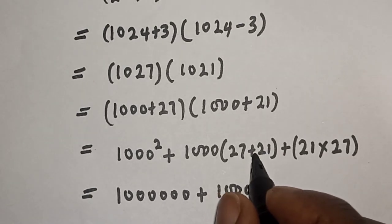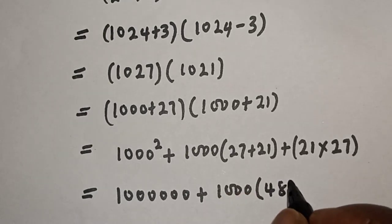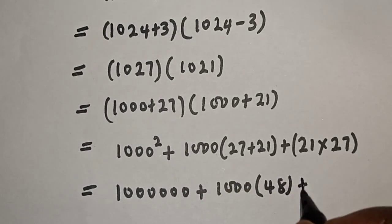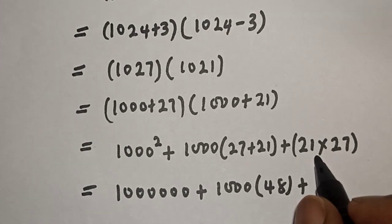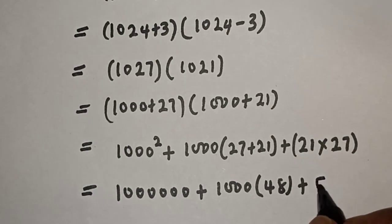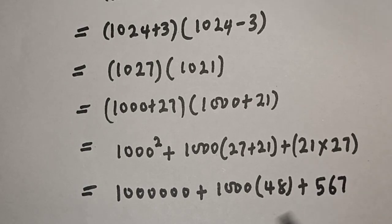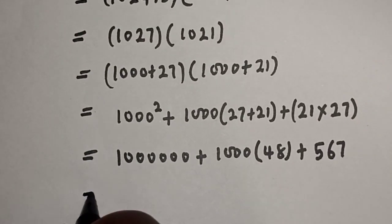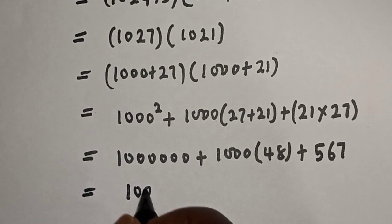That is 567. So this is equal to 1,000,000 plus 1000 times 48, plus 567.